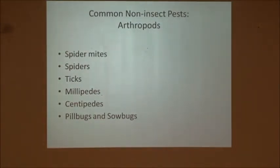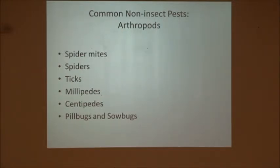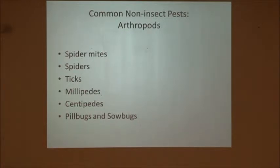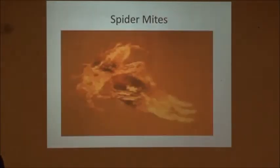Some common non-insect pests that are arthropods — these are things that we often consider bugs but they're not really, because they don't have those three body segments and three pairs of legs: spider mites, spiders, ticks, millipedes, centipedes, and pill bugs. All those are not true insects because they don't have those characteristics.